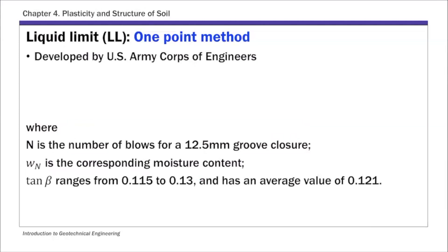There's another way to obtain liquid limit called the one-point method. The equation is: LL = W_N × (N/25)^(tan β). This is called the one-point method because you only use one data point rather than multiple samples. It's a semi-empirical approach where N is the number of blows for 12.5 mm groove closure, W_N is the corresponding moisture content, and tan β is a fitting parameter ranging from 0.115 to 0.13.